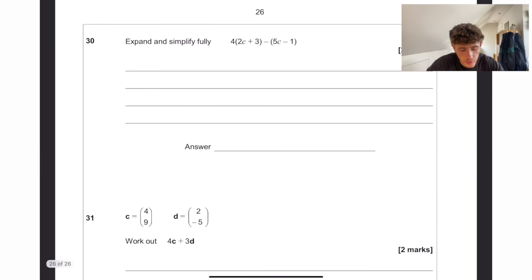Expand and simplify fully. We just do our FOIL method here. And also because there's a negative on the second one, we have to include that in there. So 8c plus 12 minus 5c plus 1. So 8c take away 5c is going to be 3c, and then 12 add 1 is going to be 13.